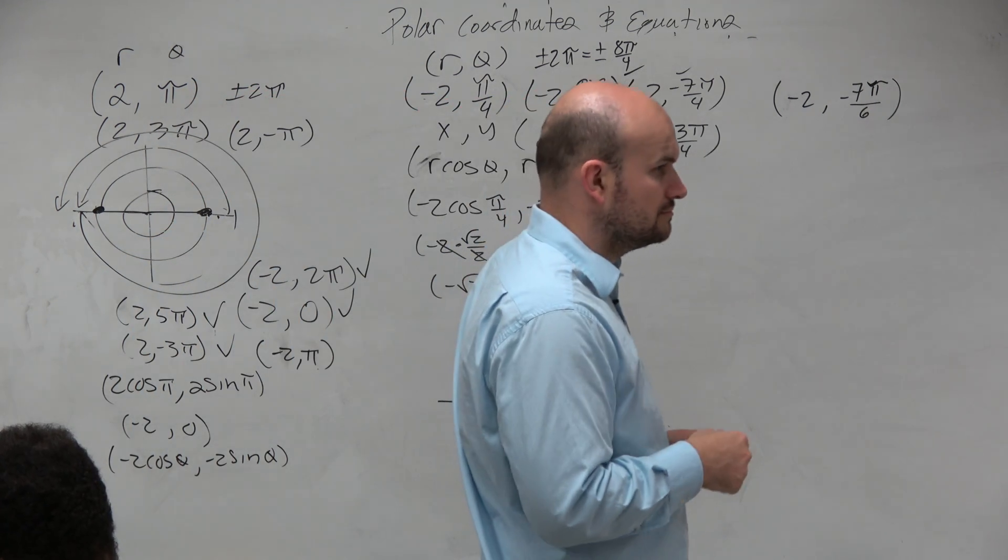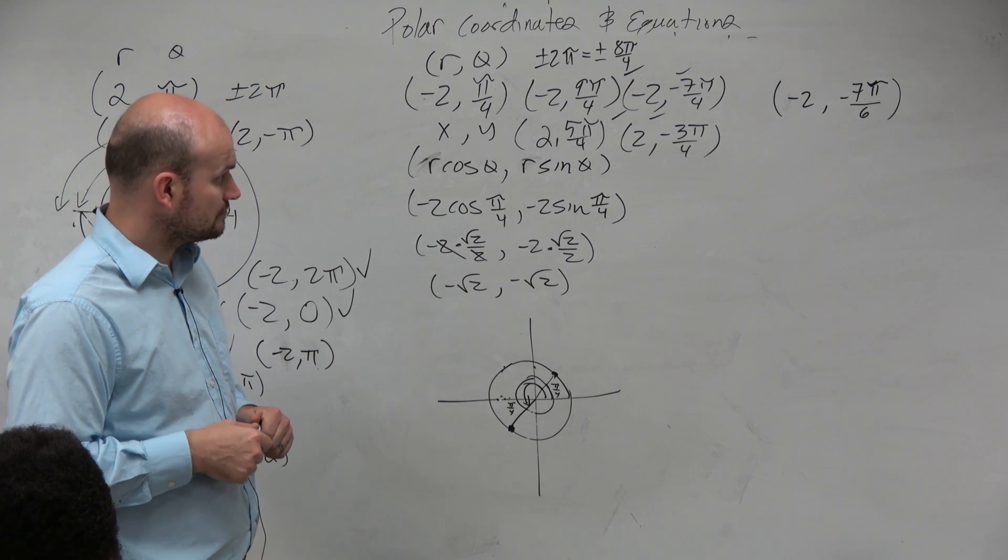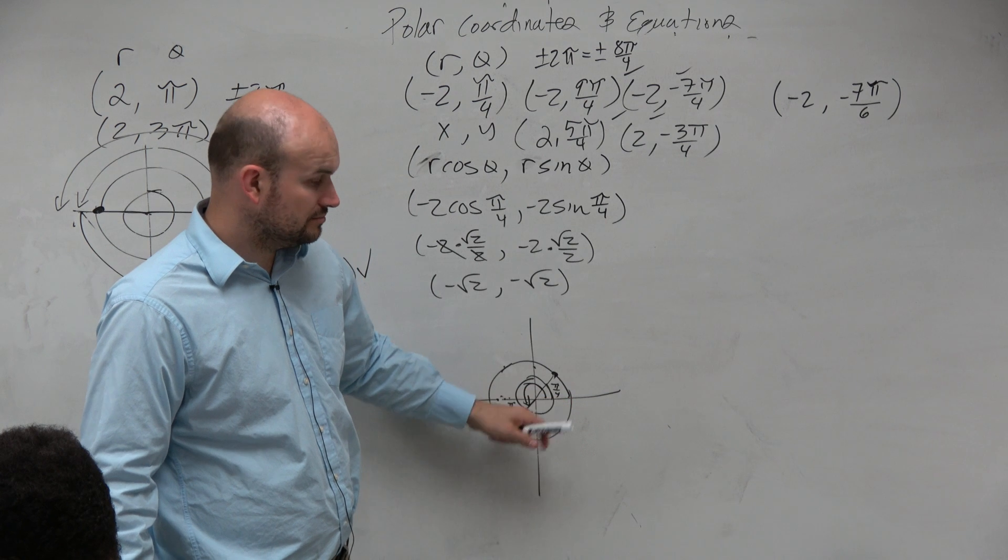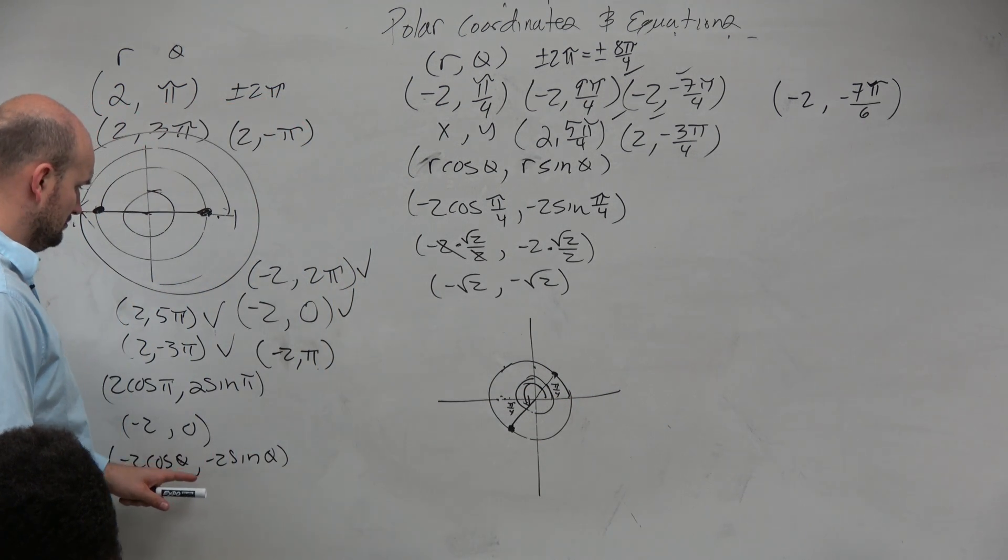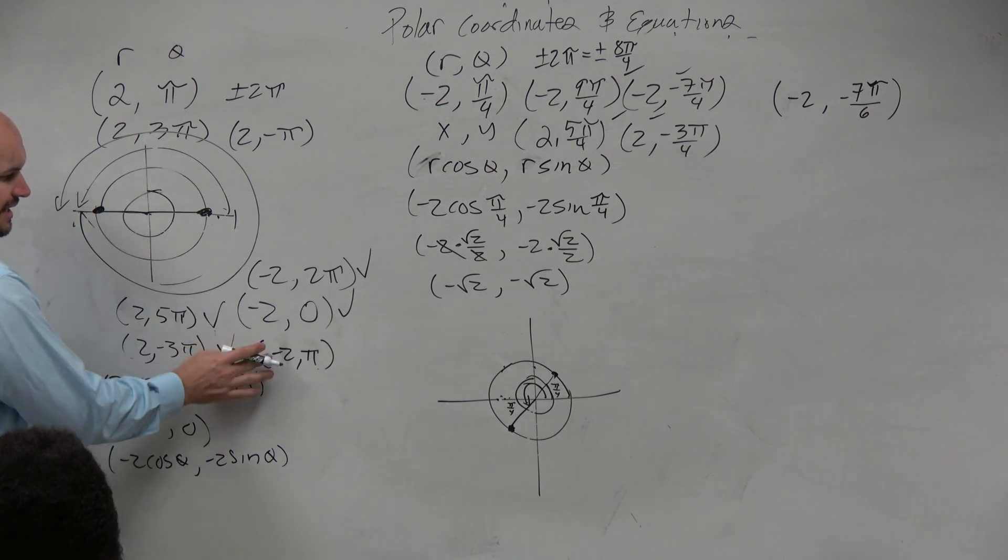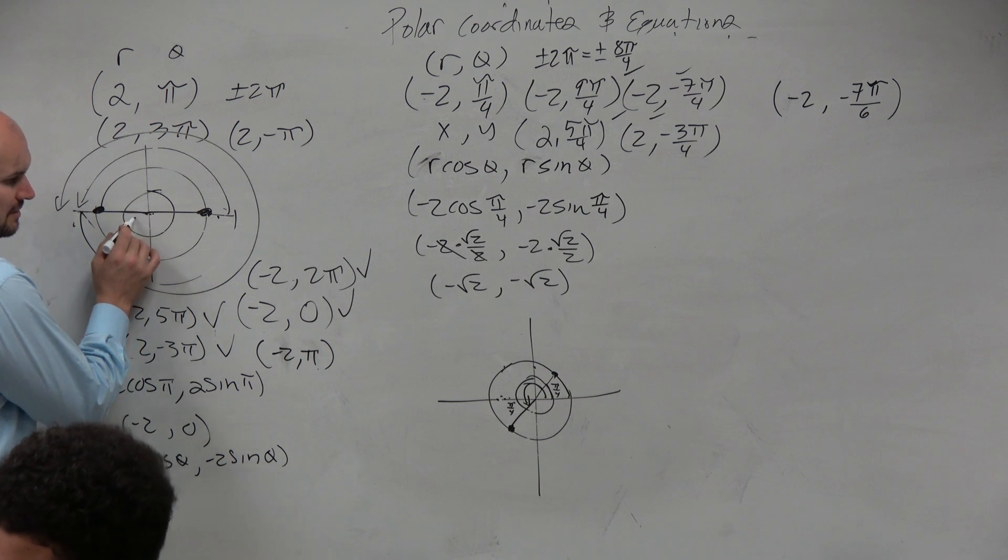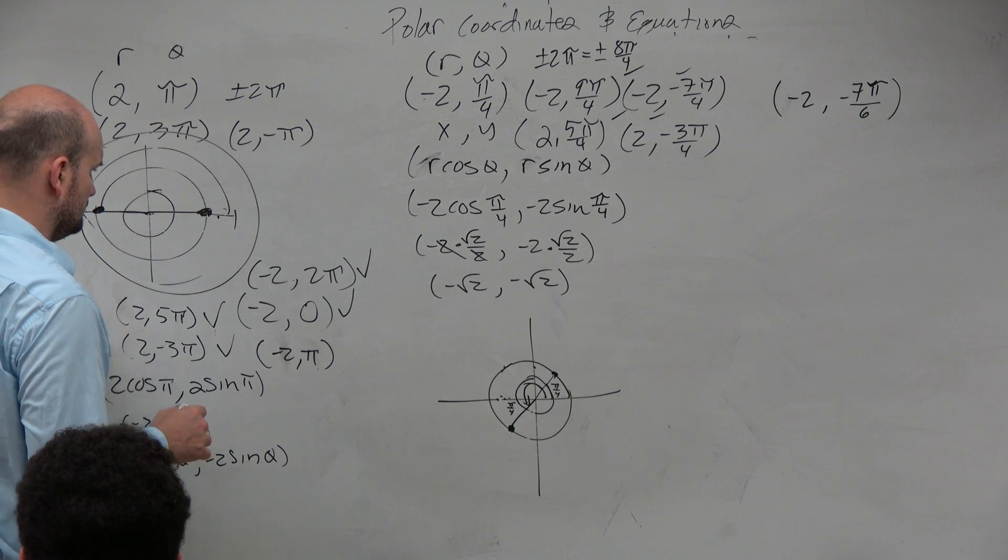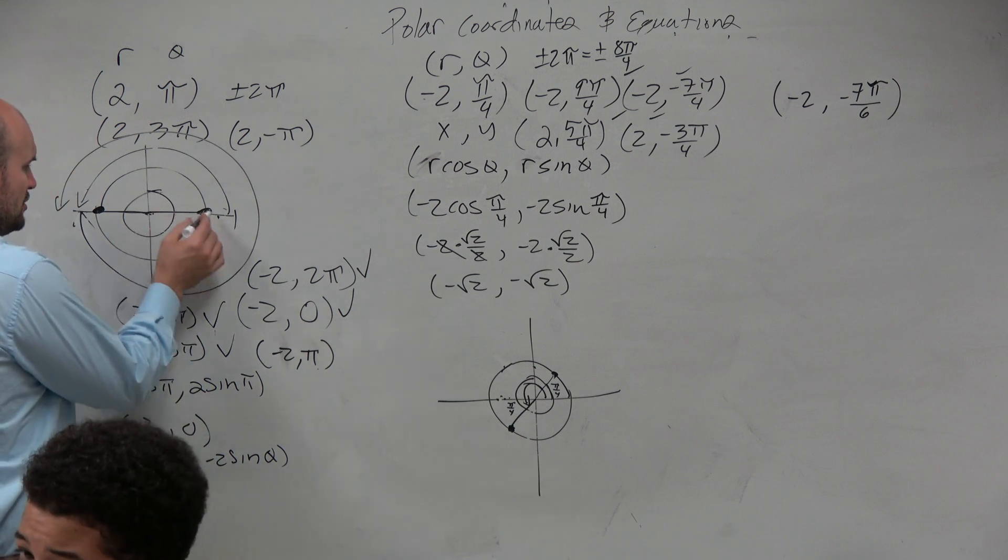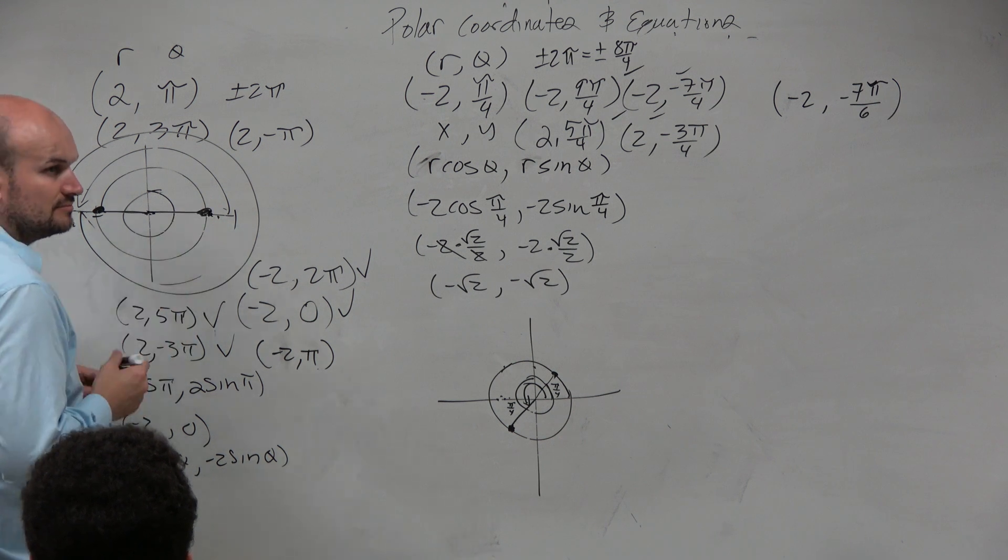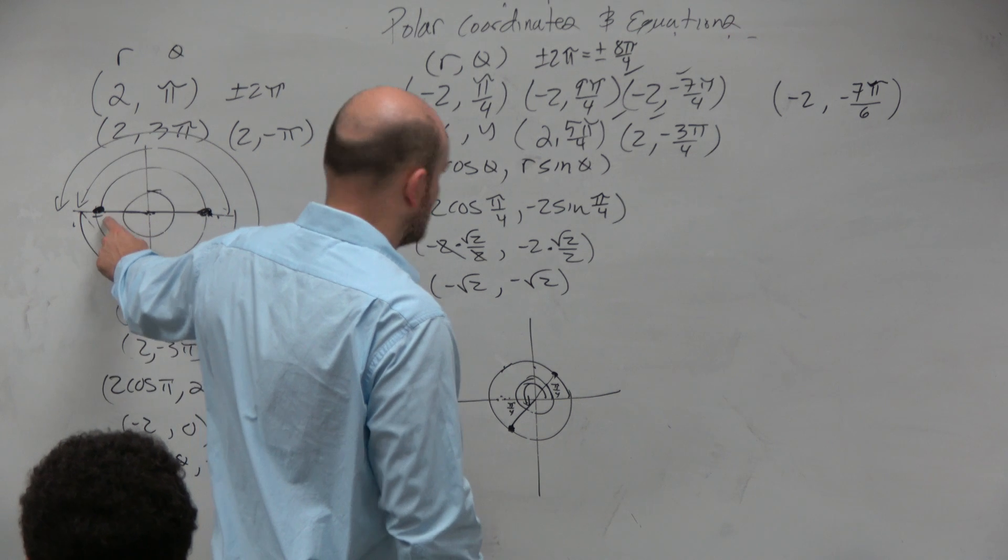How does that not work on the bottom again? Not that one, but the last one. The negative 2 negative 3 pi over 4. How does the negative 2 pi not work? Because it's pi, which is over here. But it's negative, so it's a reflection. So actually, that's over there. Oh, so it has to be that dot there. Yeah, it has to be this dot. That's the dot.